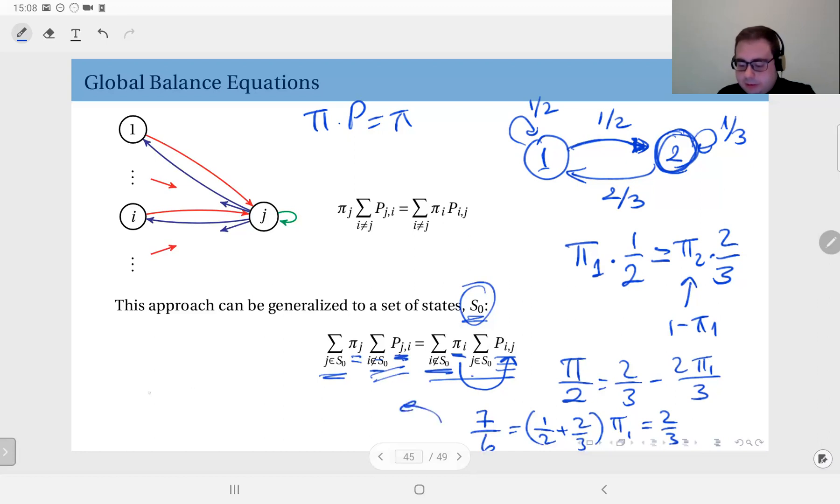Therefore, from this you can write π₁ equals 6/7 times 2/3, which gives you 4/7 as we have computed earlier. Which means π₂ will be 3/7.